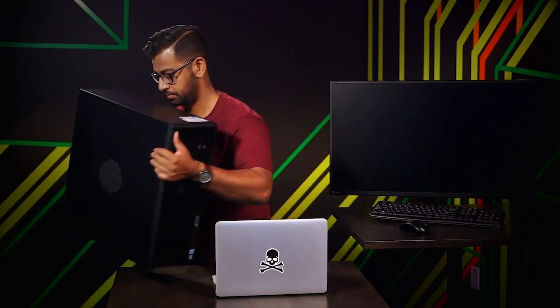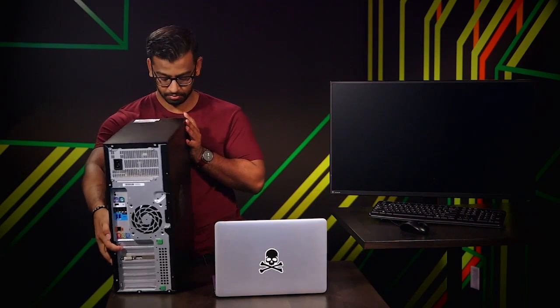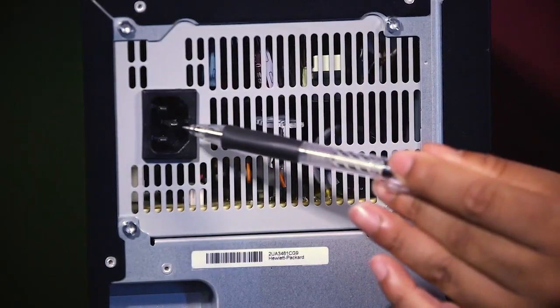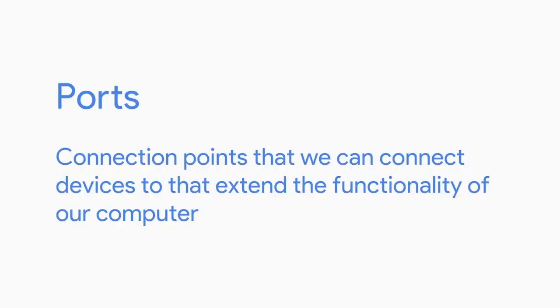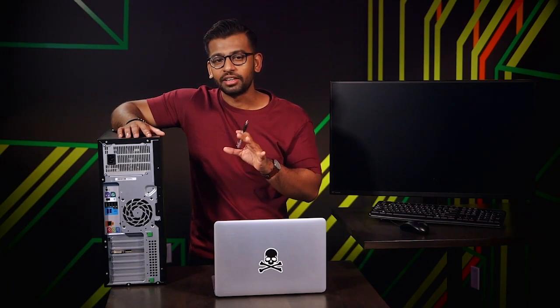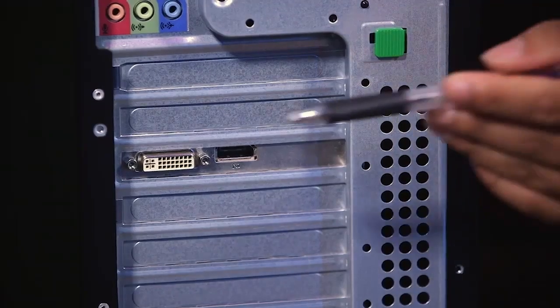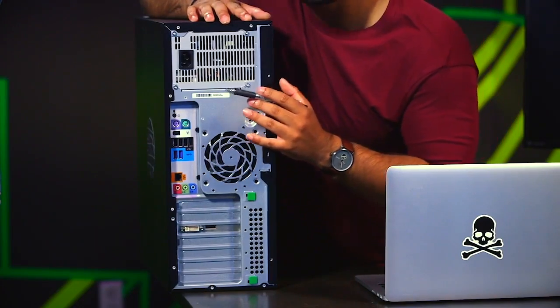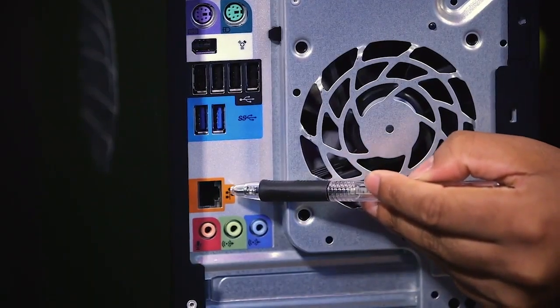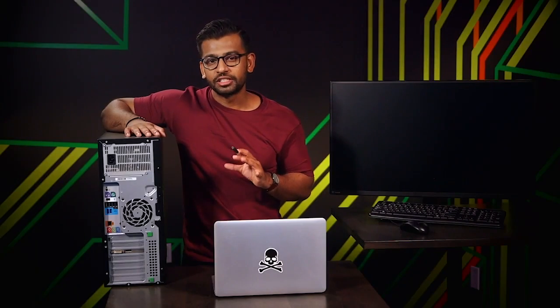Let's take a look at the back of the computer. You can see common connectors here, the power outlet here, and the common ports here. Ports are connection points that we can connect devices to that extend the functionality of our computer. We'll go into detail about the ports in a later lesson, but here's a quick rundown: there's a port to connect a monitor, a few ports to plug your keyboard and mouse, and another important one for our network connection. With just these ports, we're able to have the basic functionality to browse the web and much more.